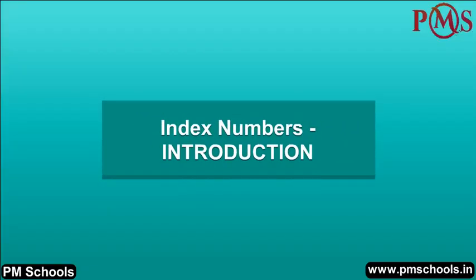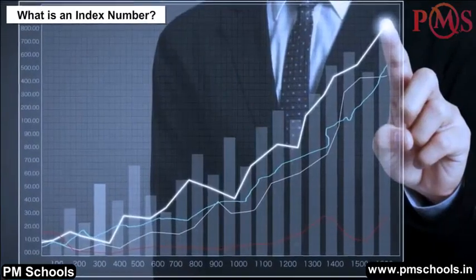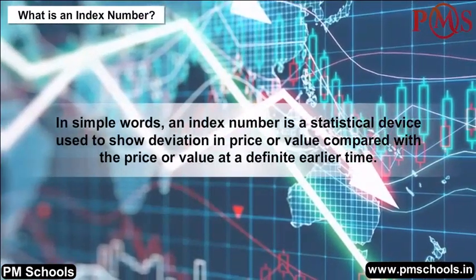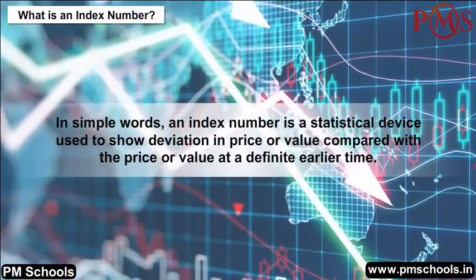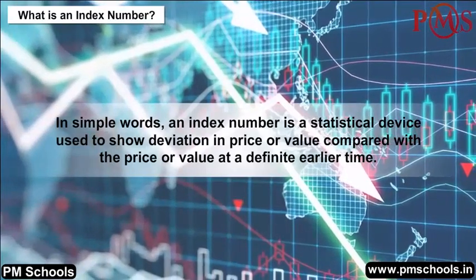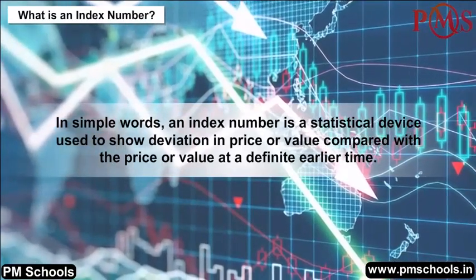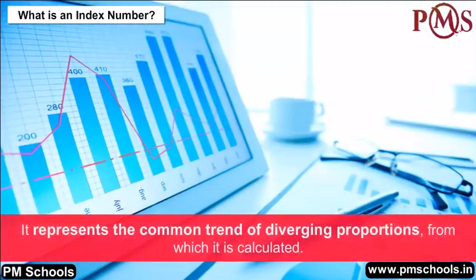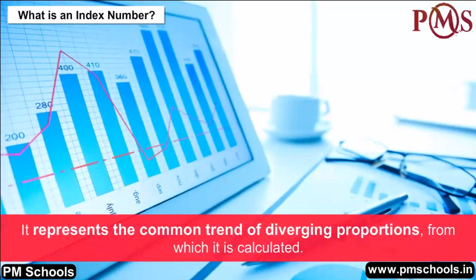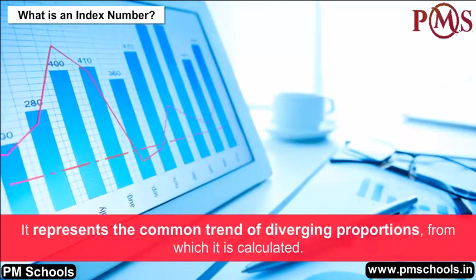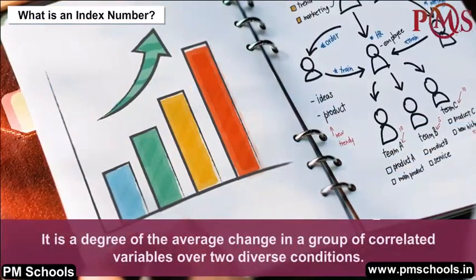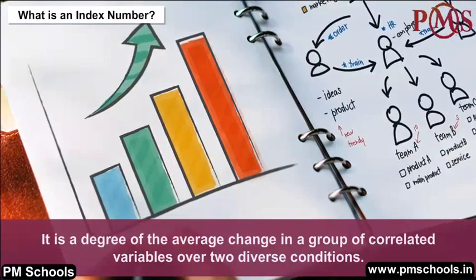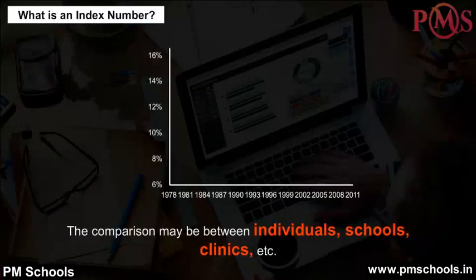Index Numbers — Introduction. What is an index number? In simple words, an index number is a statistical device used to show deviation in price or value compared with the price or value at a definite earlier time. It represents the common trend of diverging proportions from which it is calculated, and is a measure of the average change in a group of correlated variables over two diverse conditions.